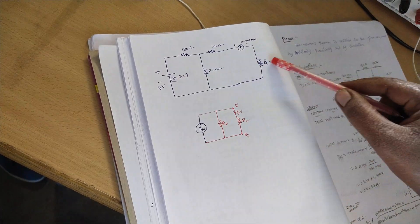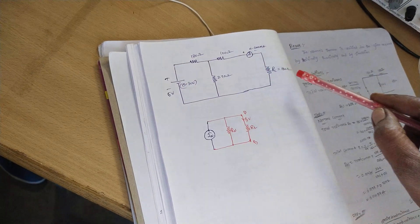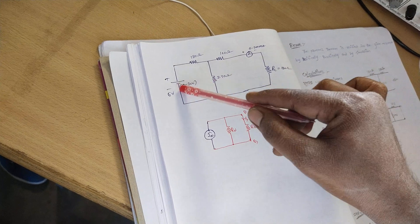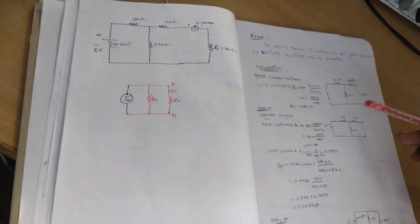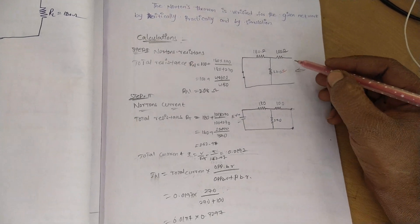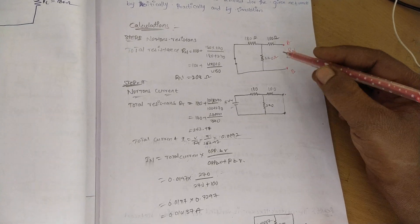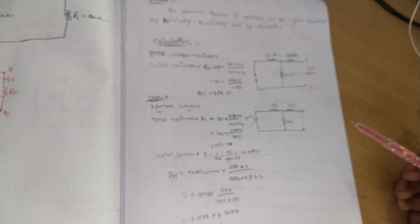Step one: finding Norton's resistance. To find Norton's resistance, we have to short the 5 volt source. If it is a current source, we have to open circuit it. The voltage source is short circuited; the 270 ohm remains, the 180 ohm load resistance is removed. From terminals A and B we calculate Norton's resistance: RN equals 180 ohm in parallel with 270 ohm, that is 180 times 270 divided by 180 plus 270, plus 100 ohm. Therefore total Norton's resistance is 208 ohm.